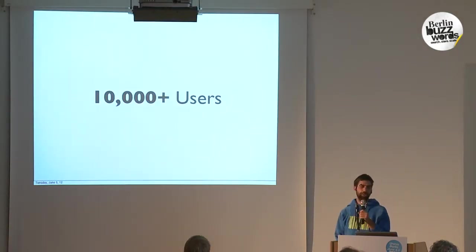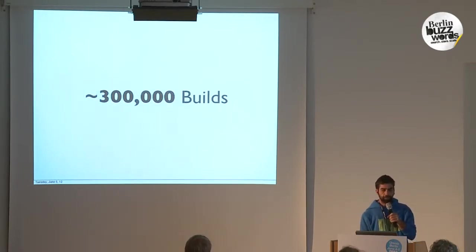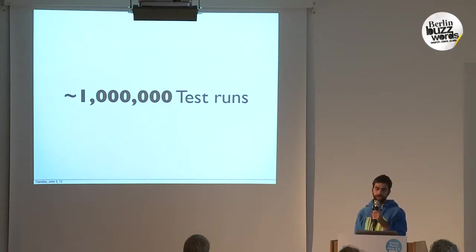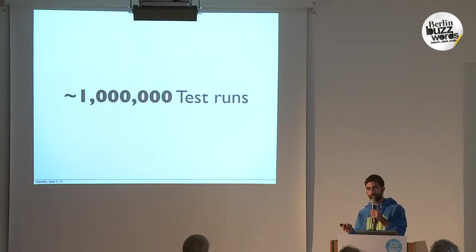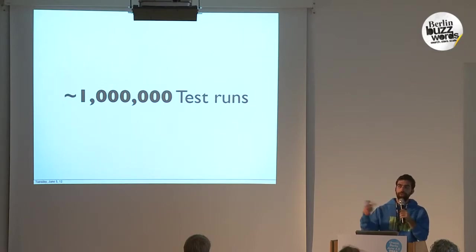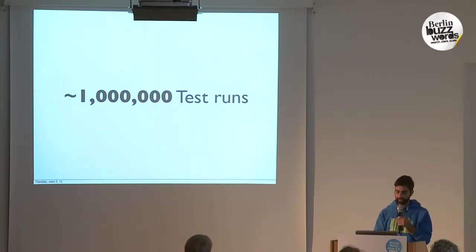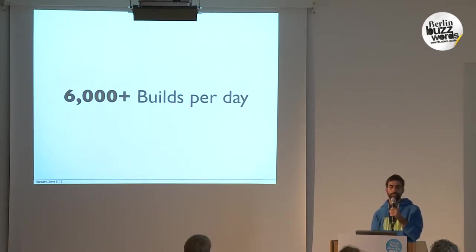Right now, Travis has over 10,000 users, 13,000 repositories, about 300,000 builds, and that equates to over about a million test runs. So that means the average build is actually using a matrix of three — testing against three different language versions, three different databases, and things like that. And we have about 6,000 builds per day.